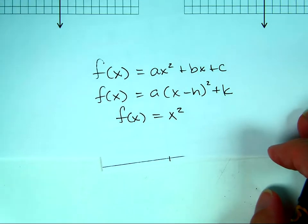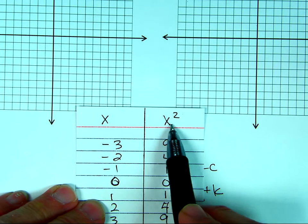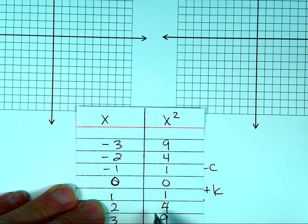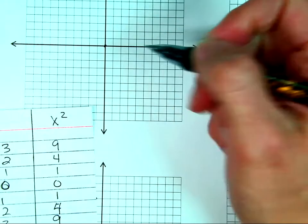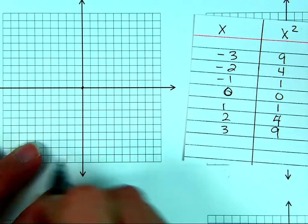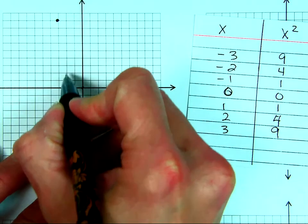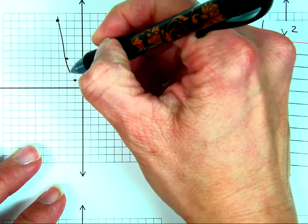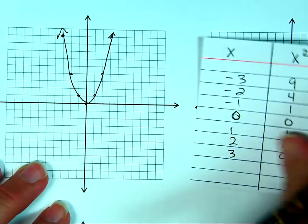So here we go with x squared. If we put negative 3 in for x, we get 9 because negative 3 squared is 9. Negative 3 times negative 3. If I graph these points — (0,0), (-3,9), (-2,4), (-1,1) — and I know it's symmetrical, so I can just follow that on the other side of the axis of symmetry, which is x = 0. I get my beautiful little x squared graph.